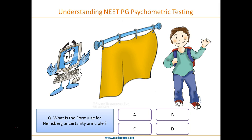Why four options? Because the computer cannot evaluate subjective answers — only objective ones. And the student gets it right. But does this mean the student is a class 12 student and not class 10? Well, the computer understands that with four options, the student can get the answer right by guesswork 25% of the time. So there is a 25% probability the answer may be correct based on guesswork alone.